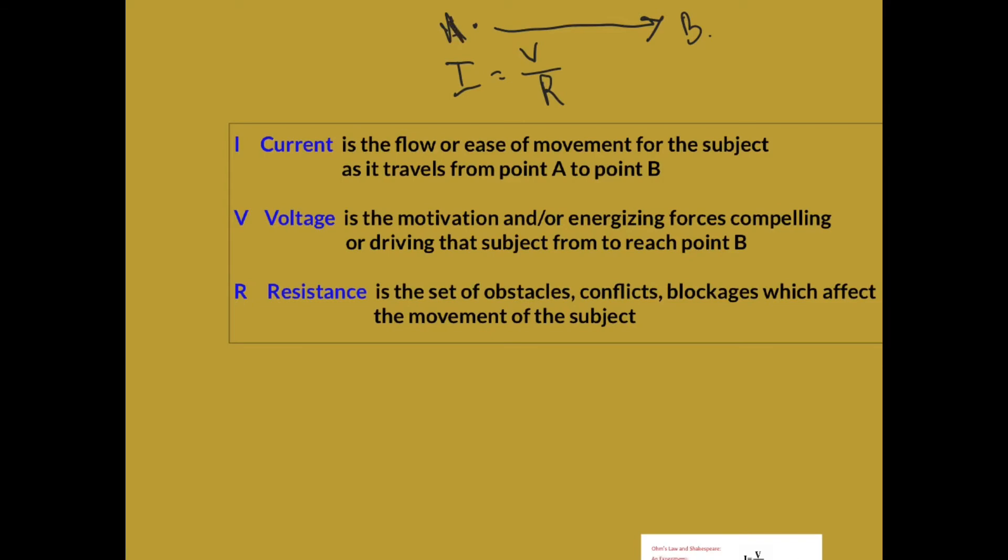Of course, to get there they have to have motivation to move from their current status to a different status. That would be the voltage. But along the way they might encounter some sort of resistance, some kind of obstacle that gets in the way, so the ease of the flow is going to be directly related to how much motivation they have to achieve something and how much resistance they face.